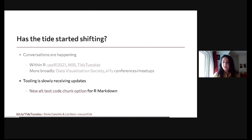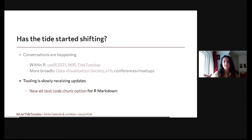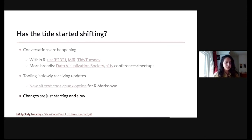There are also changes happening with tooling within R. One good example is that within R Markdown, which is very popular, there is now the ability to add alt text to a code chunk as an option, so that whatever graphical output the code chunk produces can come equipped with alt text — in the same way one might add a figure caption, we can now also add an alt text tag to that graphical output. It is important to note that these changes are great, but they are just starting and they're slow.